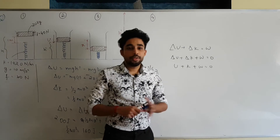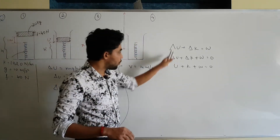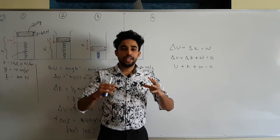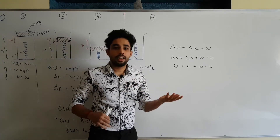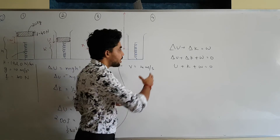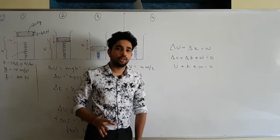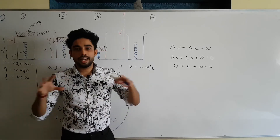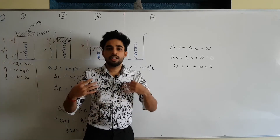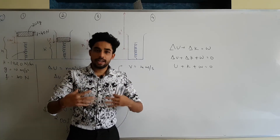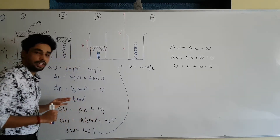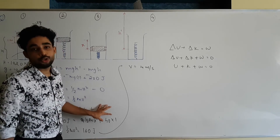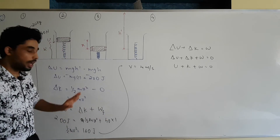In summary, regardless of which formula you use, the key understanding is: the sum of all energy changes equals zero. In this case, 200 joules of potential energy converts to 160 joules of kinetic energy and 40 joules of work done against friction — total energy is conserved.